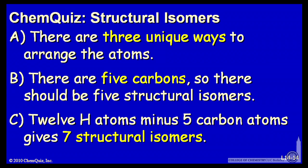Or C, 12 hydrogen atoms minus five carbon atoms gives seven structural isomers. Think about those options and make a selection.